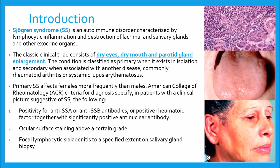Starting with introduction, Sjogren's syndrome is an autoimmune disorder characterized by lymphocytic inflammation and destruction of lacrimal and salivary glands and other exocrine organs.